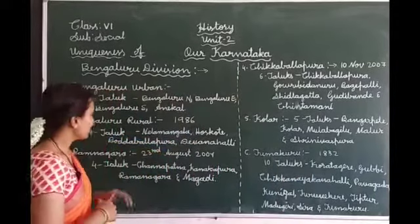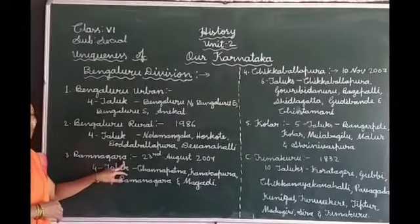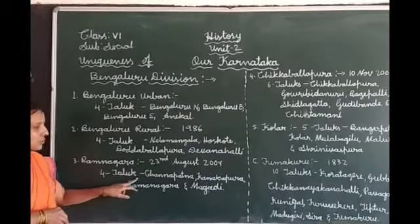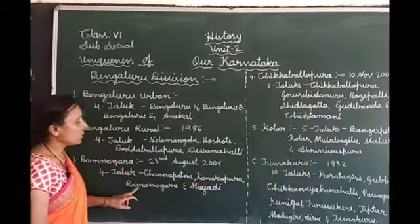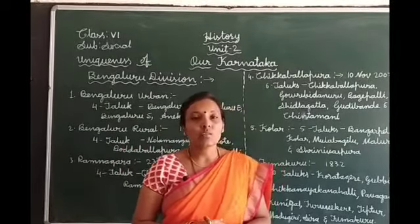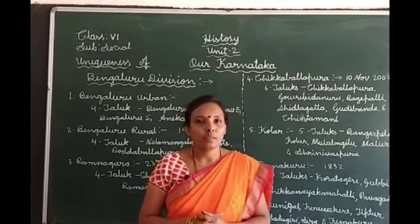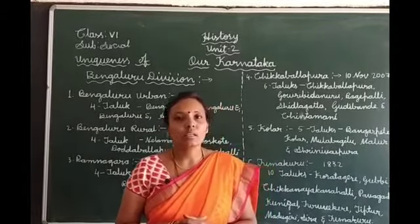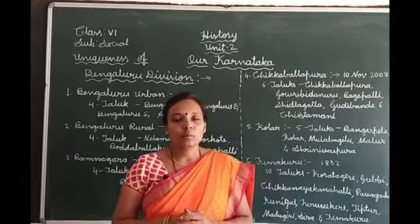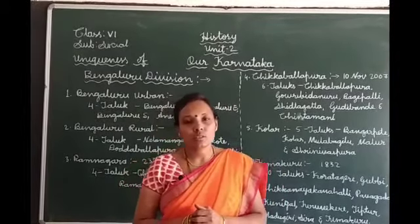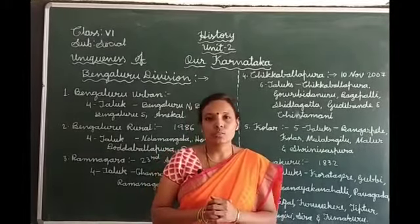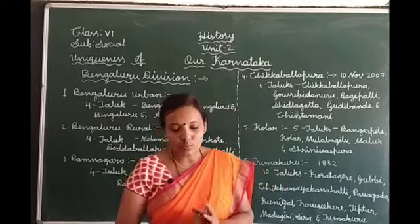The next district is Ramanagara district, formed on 23rd August 2007. There are 4 taluks: Channapatna, Kanakapura, Ramanagara, and Magadi. Ramanagara is the major and fastest-growing industrial hub in Karnataka. Bidadi is the major industrial centre, with many small-scale and large-scale industries. The two major products of this district are Channapatna wooden toys and silk.